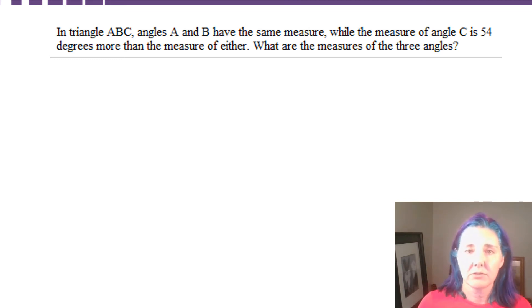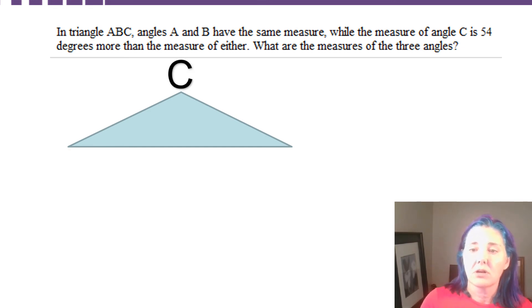Anytime a geometric figure is mentioned, draw a picture. I'm going to draw a triangle. It doesn't matter if I draw it accurately. Just something that will help us to visualize what's happening. I've drawn this triangle. It does have two angles that appear to be the same measure. I'm going to label C the one that's the different angle up top. And I'm going to let A and B be the two side angles. We know that angles A and B have the same measure, so I'm going to call them both little a. C is 54 degrees more than either of those. So, what's 54 degrees more than A? A plus 54.